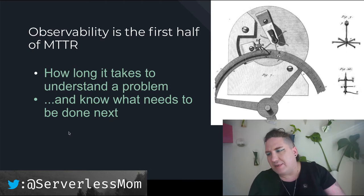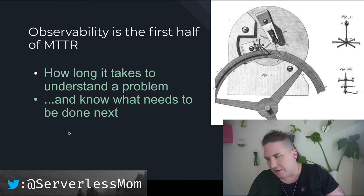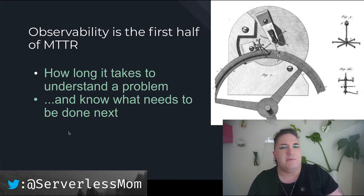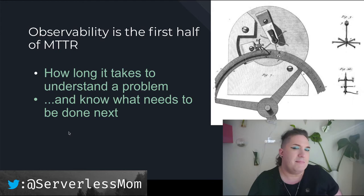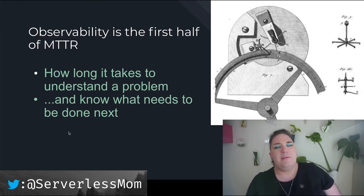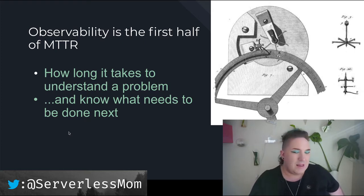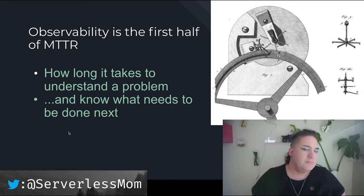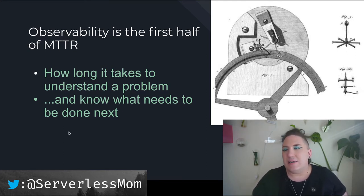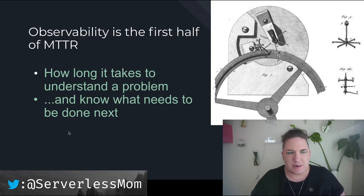I see observability as the first half of MTTR — mean time to resolution. Observability is how long it takes for you to understand a problem and know what you have to do next. You can have problems you solve readily without great observability — like restarting a server because you're running out of memory without really knowing why. But we want to look at a dashboard, a log, or a report of a problem and very quickly know what we need to do next. When that time is very low, we have high observability; when it takes a long time to reach understanding, we have low observability.